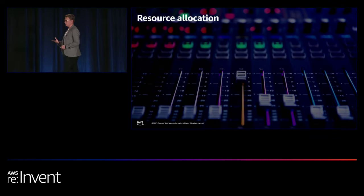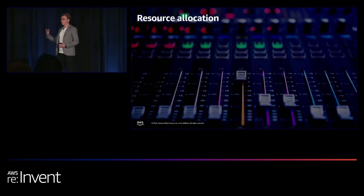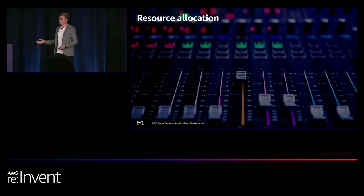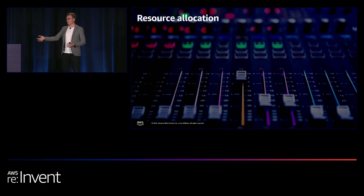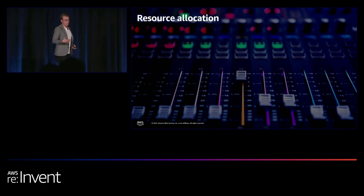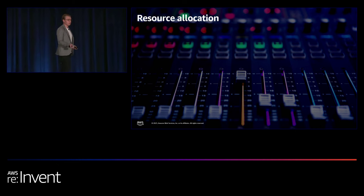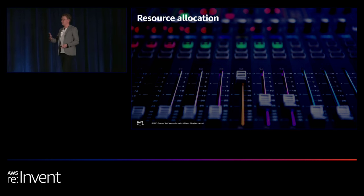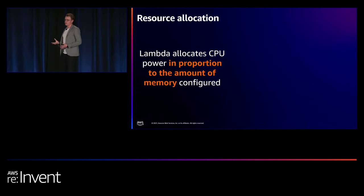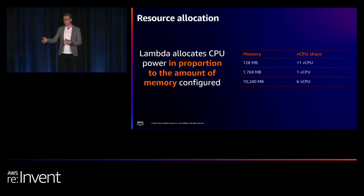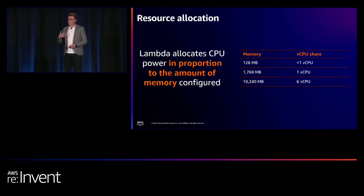Each Lambda execution environment gets its own dedicated set of resources. If you allocate a gigabyte of memory, each individual request gets its own dedicated gigabyte — unlike the server-based model where all requests share the same pool. Lambda also differs in how resource allocation works: the only resource knob you have to tweak is memory configuration. Lambda allocates CPU in proportion to memory, so as you increase memory, CPU and network bandwidth also increase. This means memory allocation, performance, and cost don't scale linearly.